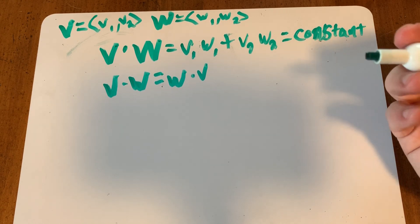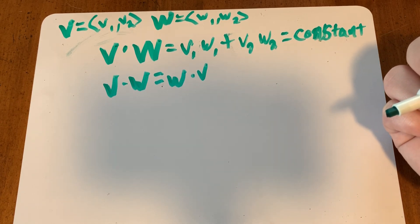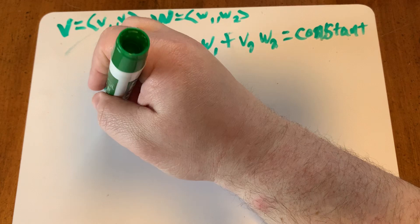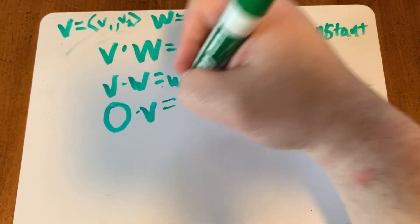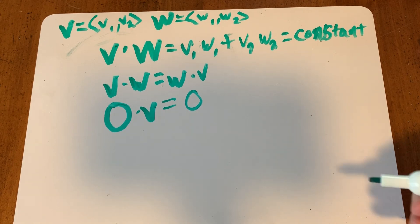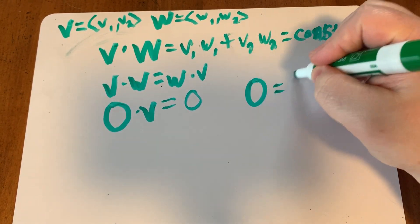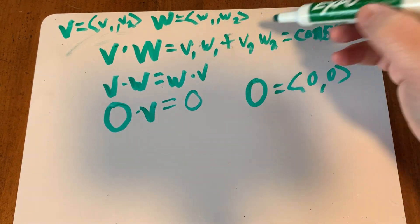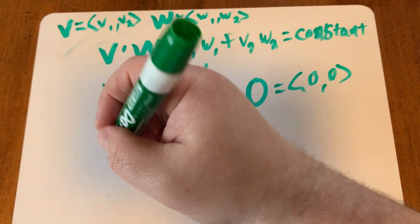Something we didn't talk about in the last video but probably should have is the zero vector. A zero vector is a vector whose magnitude is zero — that's different than not having a magnitude. The representation is just a bolded zero. If you take the dot product of a zero vector and another vector, it gives you zero, because the zero vector is just (0, 0), so each component will be zero and zero plus zero is zero.